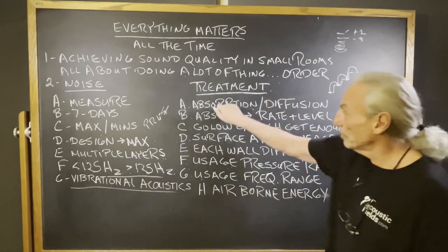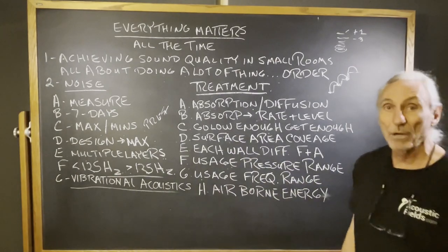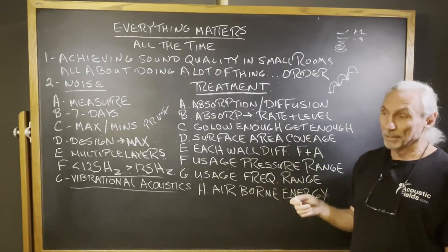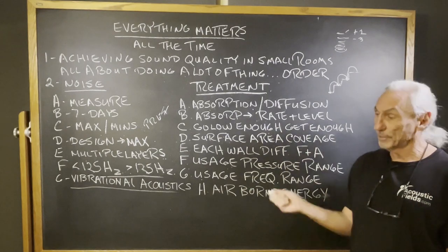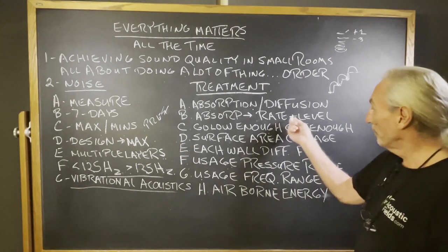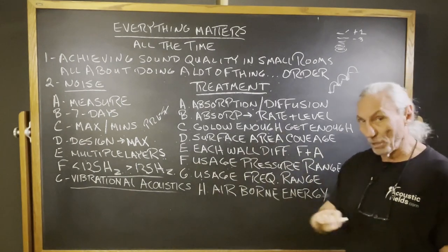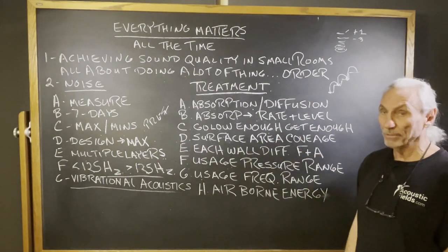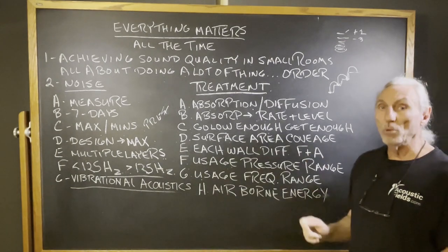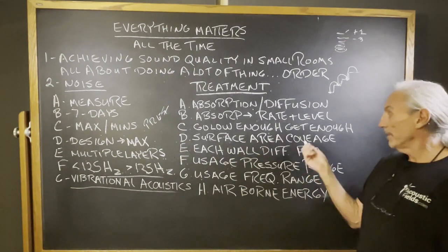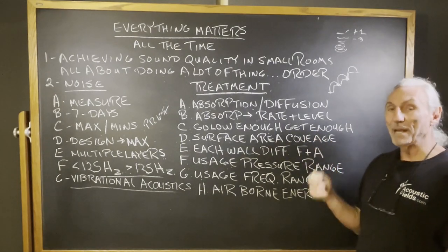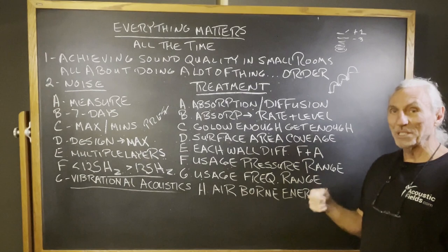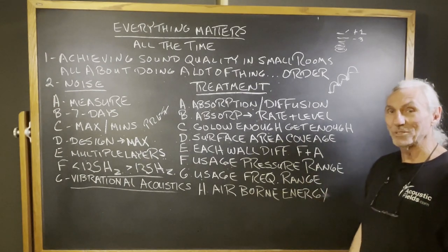Let's go back to airborne energy with treatment. There are two types: absorption and diffusion. I don't care what the names are on the internet — there are two types, plus hybrids that work halfway between. You have to see if it matches your usage. For absorption: rate and level — how low can we get, how fast can we get it? With low frequency absorption, only diaphragmatic absorption has the horsepower to get enough. Design boxes that are deep enough to go low, but you also need to get enough — 30, 40, 50, 60, 70, 80, up to 100 percent absorption at certain frequencies.